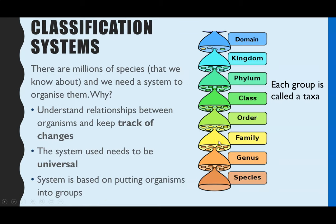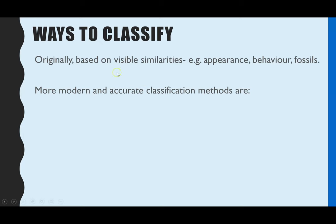To put organisms into these groups, you have to identify similarities and differences. Originally, this was based only on visible differences and similarities — appearance, behavior, and fossil records. The downside is that some members of the same species can look completely different, like the many breeds of dogs. Conversely, two different species can look very, very similar, leading to misidentification. That's why classification is no longer done just on appearance — much more modern and accurate methods are used.